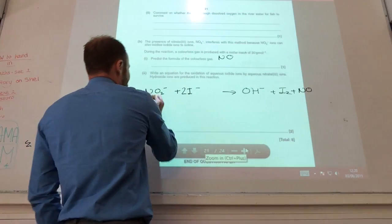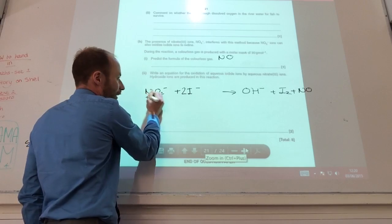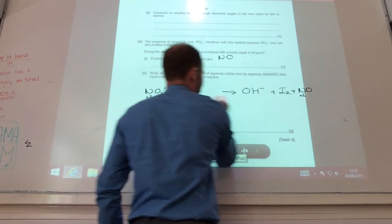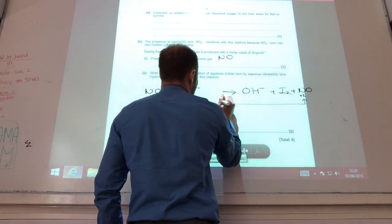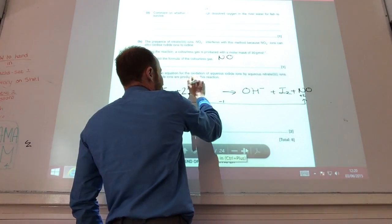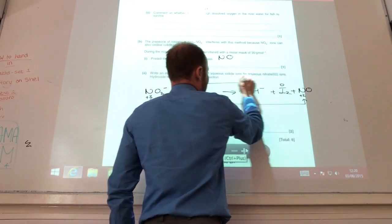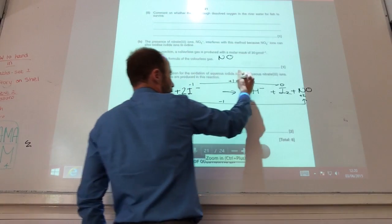So oxidation state of nitrogen there is going to be plus 3, they told me that, and it's plus 2 there. So that change is a change of minus 1. Iodide is minus 1 there and 0 there. So the change is plus 1, but I've got two of them.